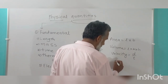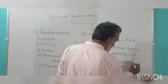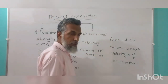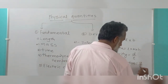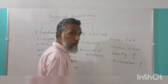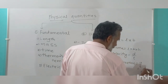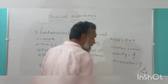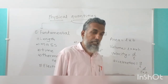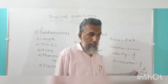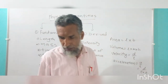Acceleration is also a derived quantity. Acceleration is velocity divided by time. Velocity is distance divided by time, so acceleration is distance divided by time squared. When you find acceleration, you have to measure distance and you need to take time two times. That's why acceleration is known as a derived quantity.